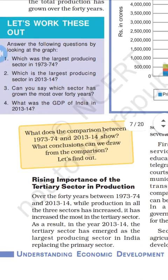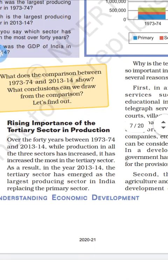Another subtopic here is the rising importance of the tertiary sector in production. The third sector is very important for manufacturing and delivering products to consumers. Primary provides raw materials, secondary provides manufactured goods, and the tertiary sector provides services to the consumer market.